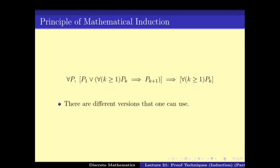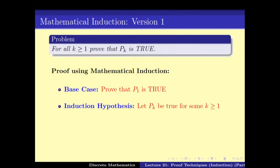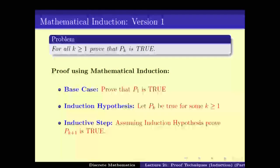You can get quite a number of different versions of this, and depending on the problem we might have to choose the right version. We have gone over a few of the versions — let me go over them again. To start with, we have the first version, the basic version, which says that to prove that for all K ≥ 1 Pk is true, we have the base case which is proving P1 is true.